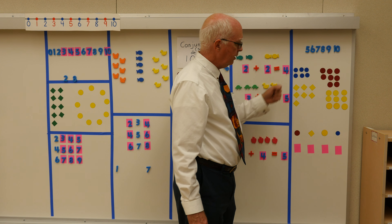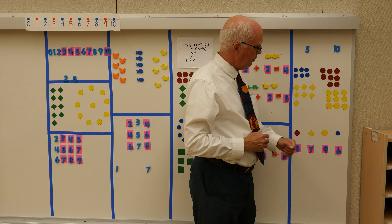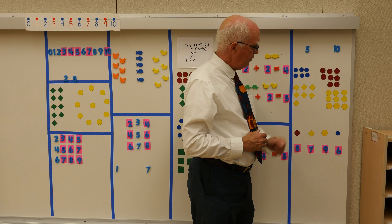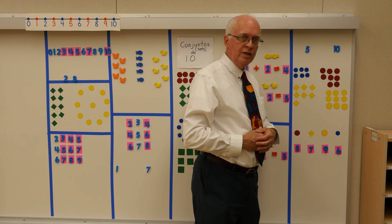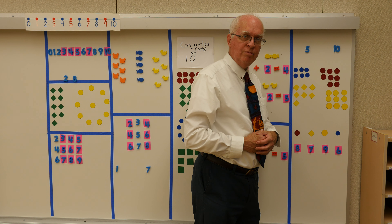¿Qué tenemos más? Which group is more? Ocho, siete, nueve y seis. Yo pienso que el grupo que es más es el grupo de círculos amarillos, y el grupo que es menos es el conjunto de círculos azules. Muy bien, niños. Gracias. Nos vemos.